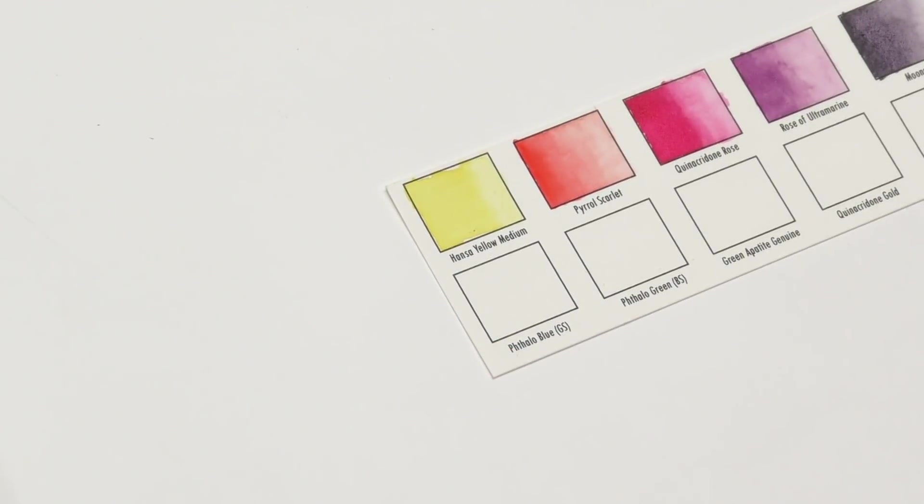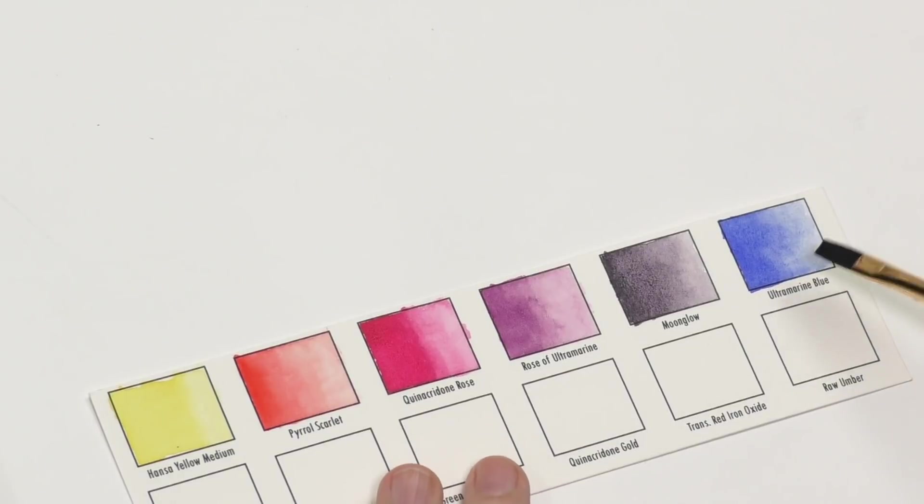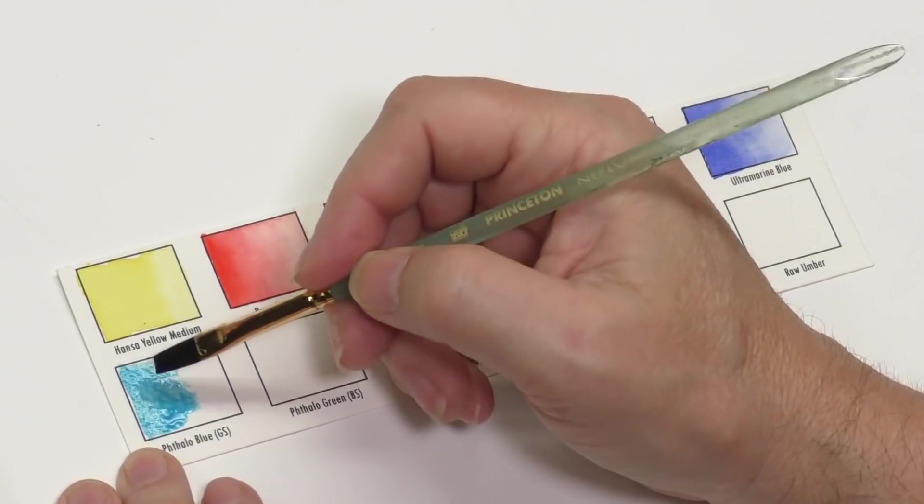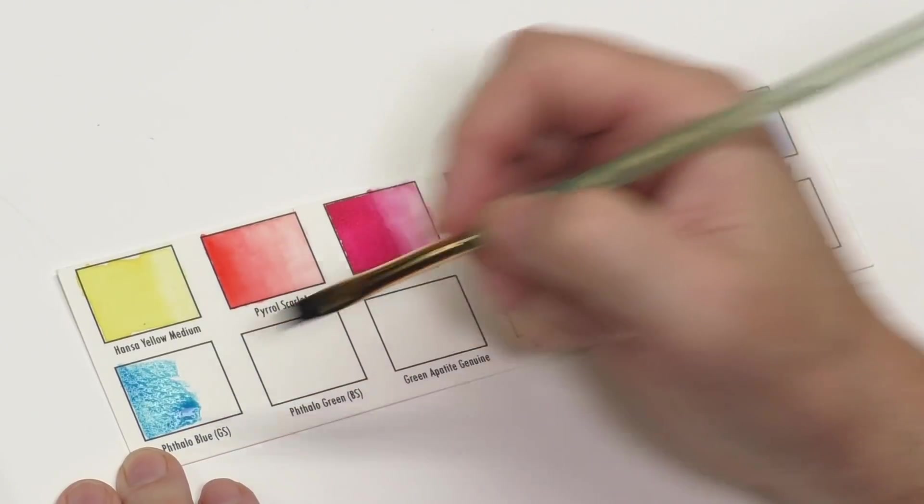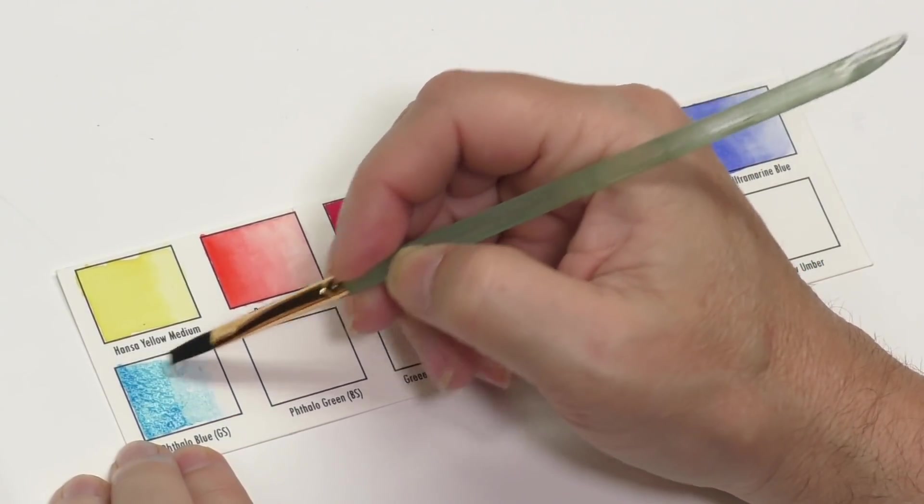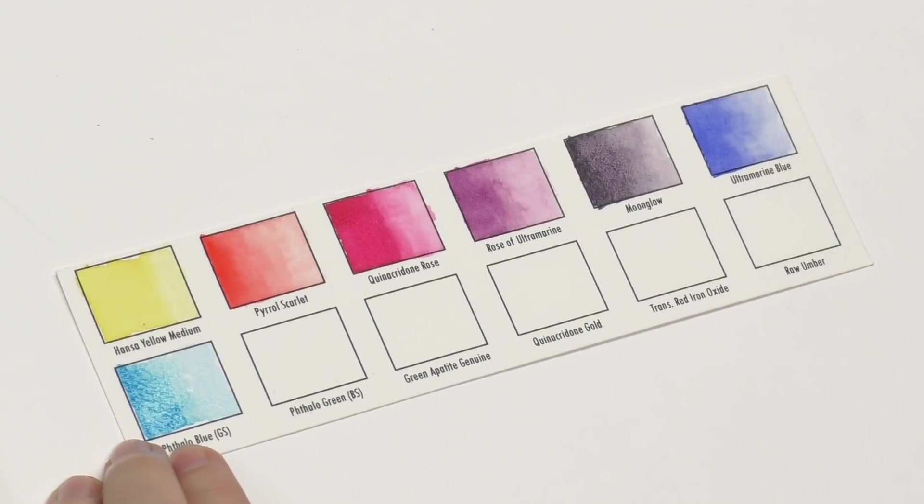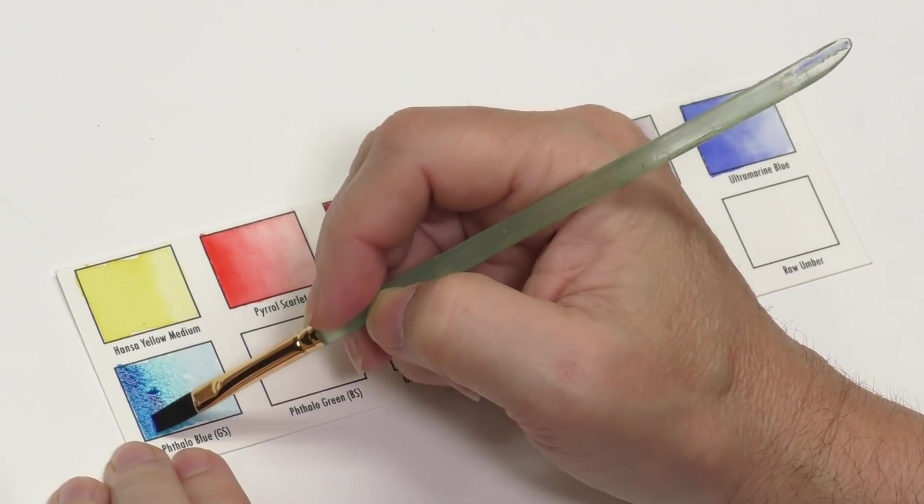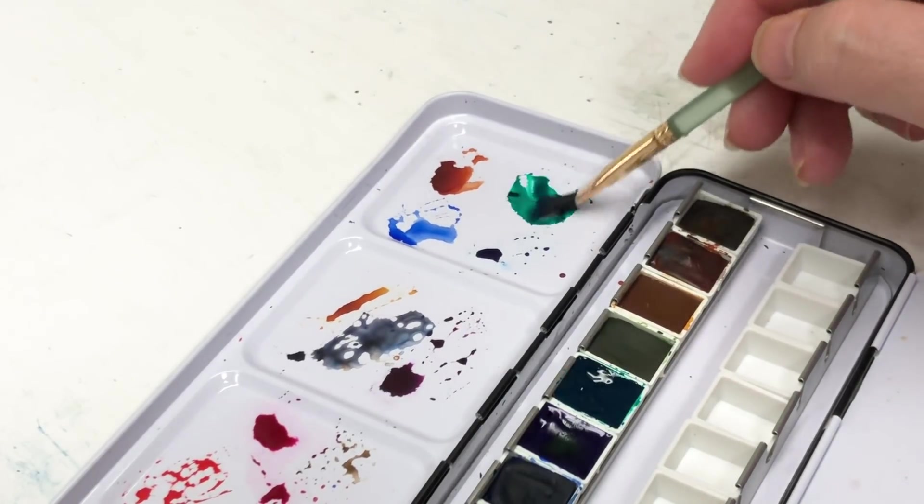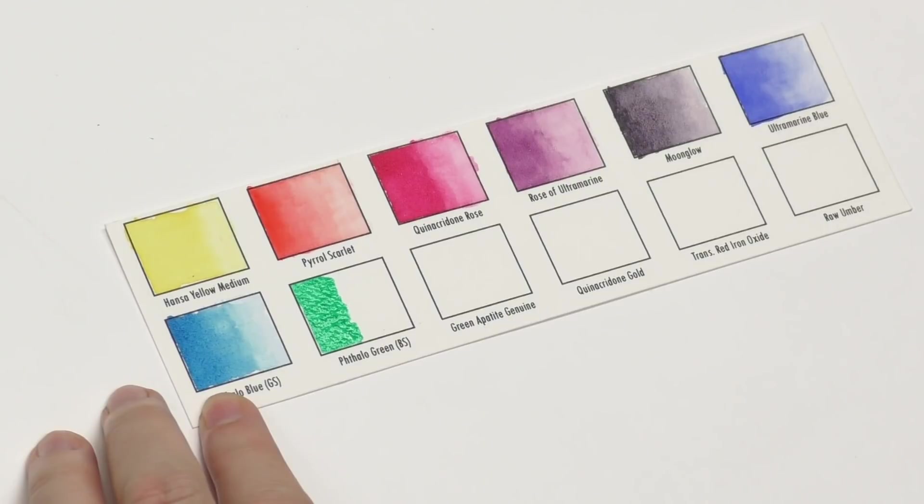So moving on, the other blue, and here we're getting into splitting primaries again, is phthalo blue green shade. Now ultramarine sort of fills that warm blue slot, warm leaning. Phthalo blue green shade is a cool leaning blue. And I really like Daniel Smith's version of this too. It's just very brilliant. I mean, phthalo blue green shade is brilliant enough, but I like how aqua it leans. It kind of leans more aqua, I think, than a lot of other brands. So it splits that primary again really well. Which just makes for a nice mixing wheel, if you will. We're going to get into the greens. I have two greens. The first being phthalo green, blue shade. And being a big landscape painter, it's just a great green to have. Good mixing green. Lots you can do with that color.